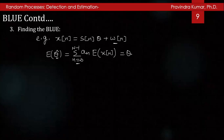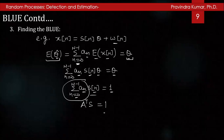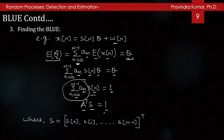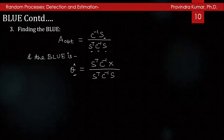The unbiasedness condition gives E[θ̂] = Σ a_n · s_n · θ = θ, which means Σ a_n s_n = 1, or in vector form a^T s = 1. Solving the constrained optimization, the optimal a is: a = C⁻¹ s / (s^T C⁻¹ s). Therefore the BLUE of θ is: θ̂ = s^T C⁻¹ x / (s^T C⁻¹ s), and the variance of θ̂ is: 1 / (s^T C⁻¹ s).